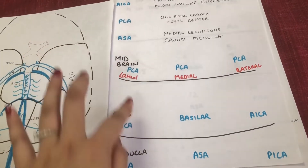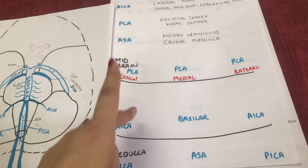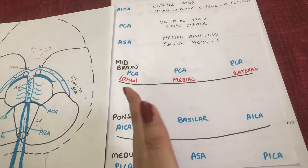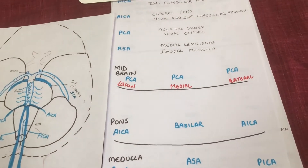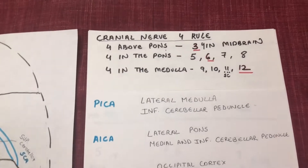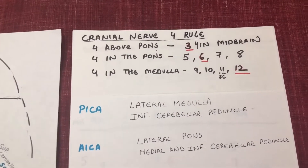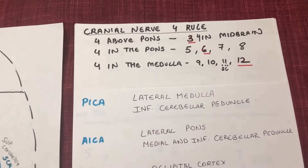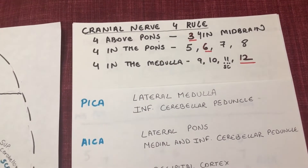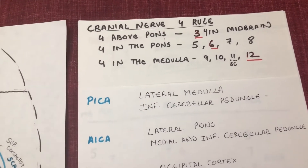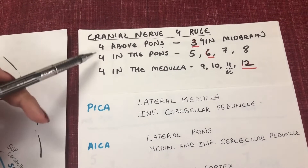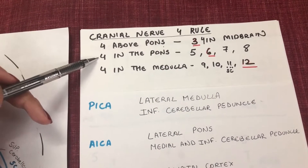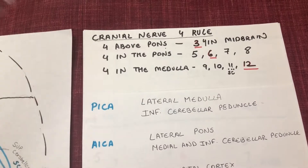So now you have the three sections — midbrain, pons, and medulla — and all the arteries supplying them. Now let's add the cranial nerves. You guys know the cranial nerve 4 rule: 4 above the pons, 4 in the pons, and 4 in the medulla.